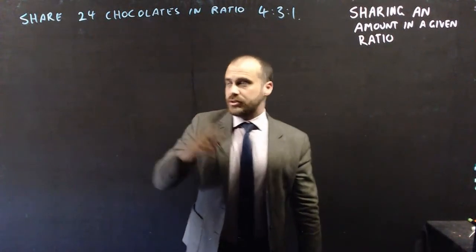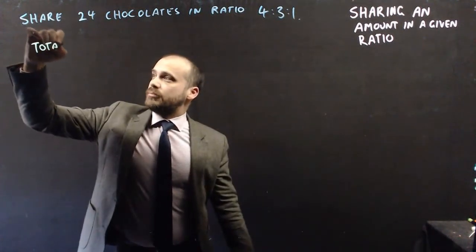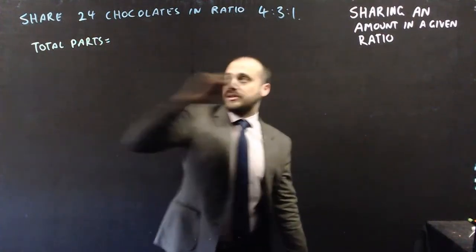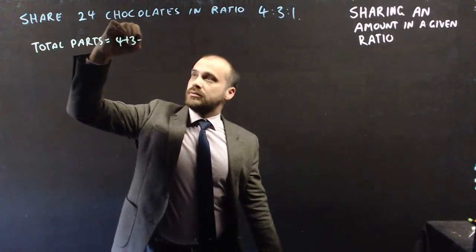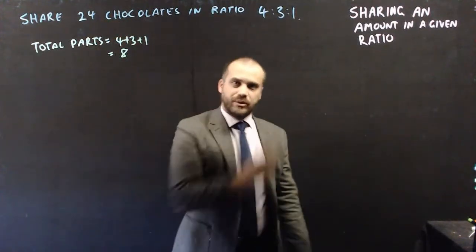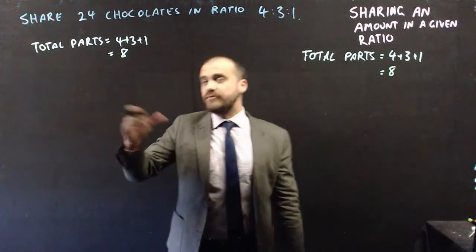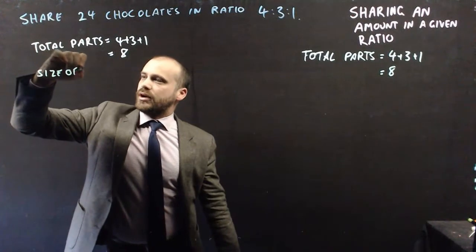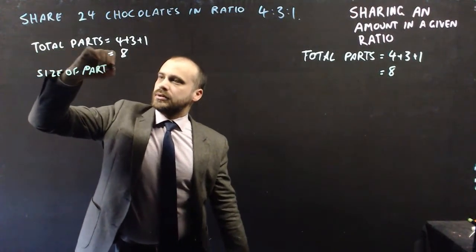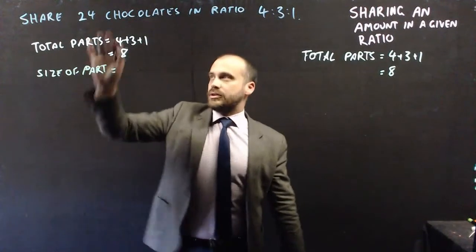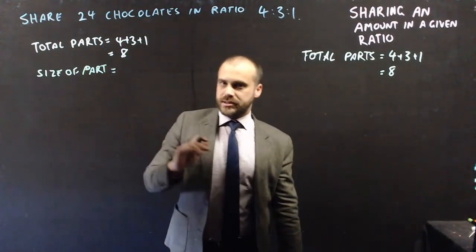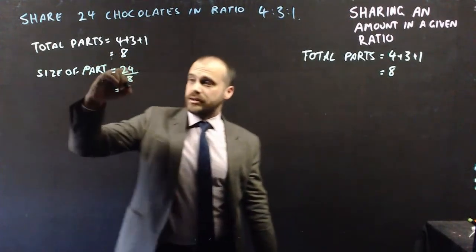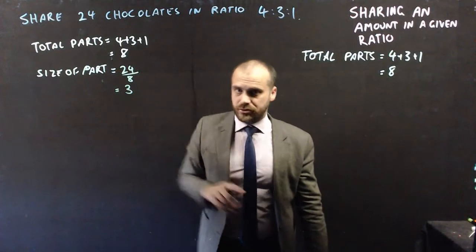In both methods, the first step is to find the total number of parts. Here the total is 4 plus 3 plus 1, which equals 8. On the first method's side, we find the size of each part: there are 24 chocolates and 8 parts, so 24 divided by 8 equals 3. Each part is 3 chocolates.